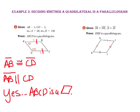In part B, it is given that segment HI is congruent to segment HK, and segment JI is congruent to segment JK. Can we prove quadrilateral HIJK is a parallelogram? To have a parallelogram, we need both pairs of opposite sides congruent. Since HI and HK are consecutive sides, not opposite sides, and the same is true for JI and JK, the opposite sides are not congruent. So no, we cannot prove quadrilateral HIJK is a parallelogram.